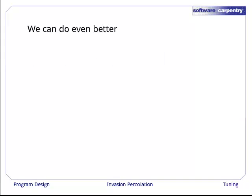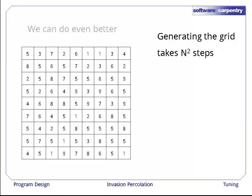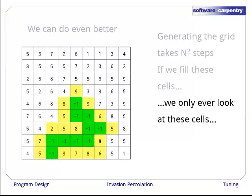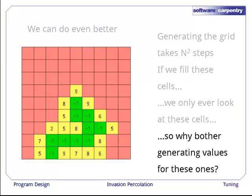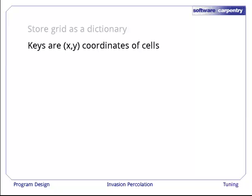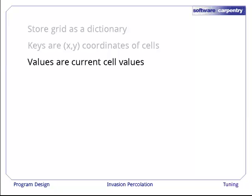Are we done? No. We can do even better. Generating a grid of n squared values takes n squared steps. After all, we have to create n squared random numbers. But if we fill the cells shown in green, we only ever look at the cells shown in green plus the cells shown in yellow. So why are we bothering to generate values for the cells shown in red? Why do we ever create those cells at all? Instead of storing the grid as a list of lists, we can store it as a dictionary. The keys in the dictionary are the x, y coordinates of cells. The values are the current values of those cells.